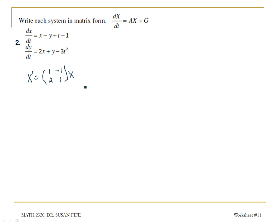That's multiplied by my variables, and then I'm going to add on whatever's left over. t minus 1 from the first equation, and negative 3t squared from the second equation. And here I have matrix form of the answer, of the system.